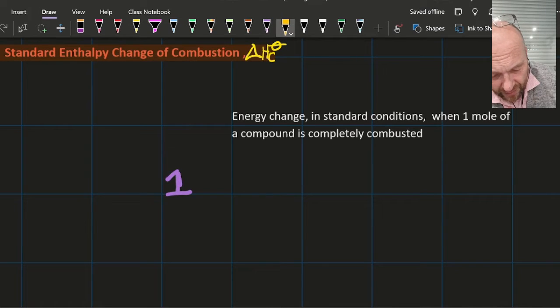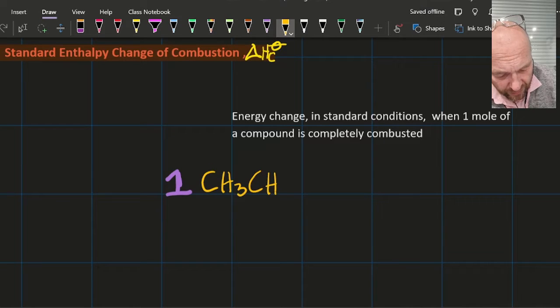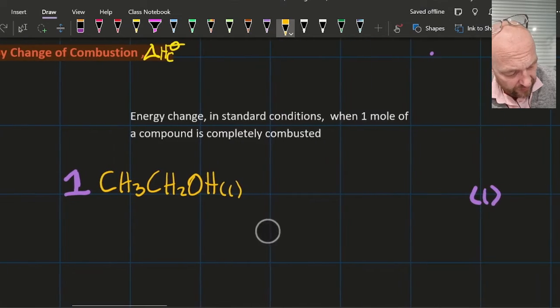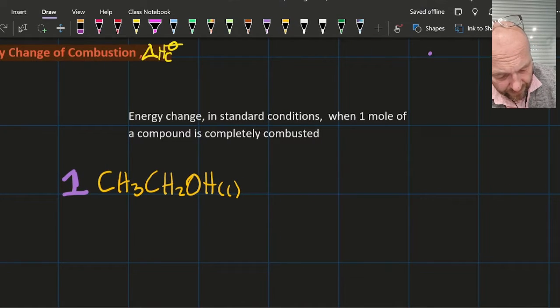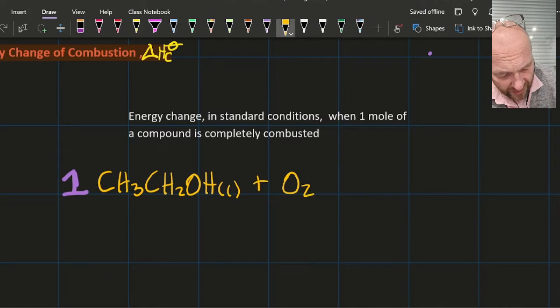I'm going to choose ethanol because there's a couple of little things people mess up. Again, it's one point, and if you haven't got the state symbols there, you're going to lose that one point. If I'm burning it, it's going to be in oxygen—that's a gas at standard temperature—and I'm going to make carbon dioxide and I'm going to make water.